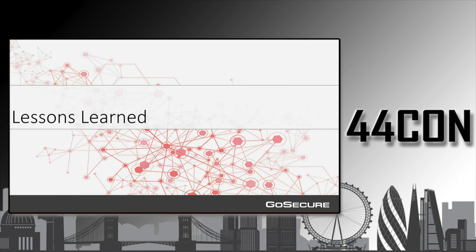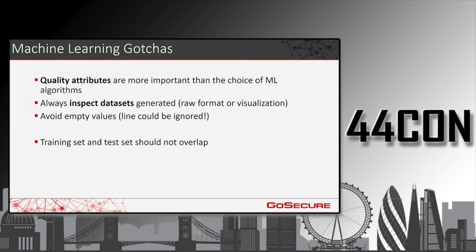Lesson learned: if you're starting a machine learning project, first focus more on the model than the algorithm. It's easy to take poor data and try different algorithms to gain 1-2% better, but if you have quality attributes that makes the difference. Always inspect your dataset — it's easy to generate dynamic values and realize later that a value is missing or not as expected. One thing my colleague observed: some machine learning algorithms, if you don't specify a value and it's null or doesn't apply, and the algorithm doesn't support empty values, they'll simply skip the data without any warning.